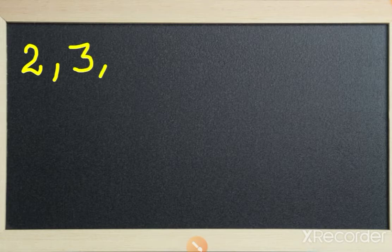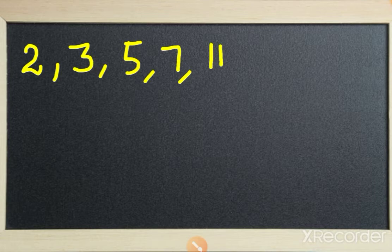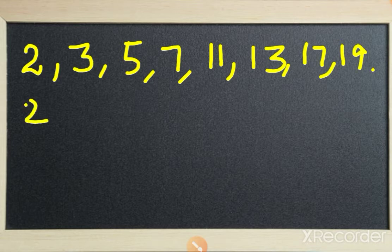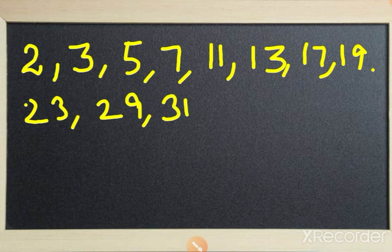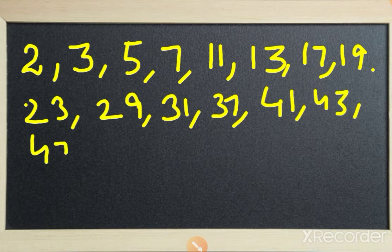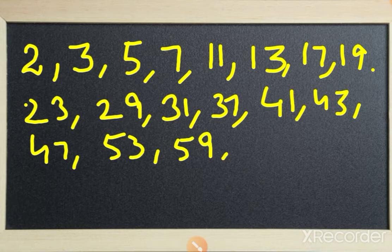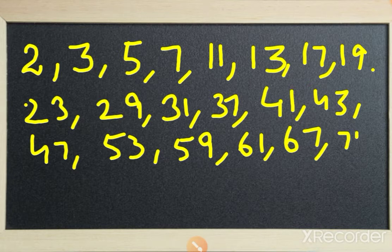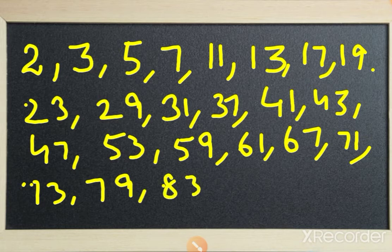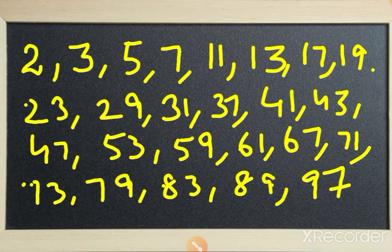Similarly we have three — this is also a prime number. Five is a prime number, seven is a prime number, eleven is a prime number, thirteen, seventeen, nineteen, twenty-three, twenty-nine, thirty-one, thirty-seven, forty-one, forty-three, forty-seven, fifty-three, fifty-nine, sixty-one, sixty-seven, seventy-three, seventy-nine, eighty-three, eighty-nine, and ninety-seven. If you count, these are a total of twenty-five prime numbers.